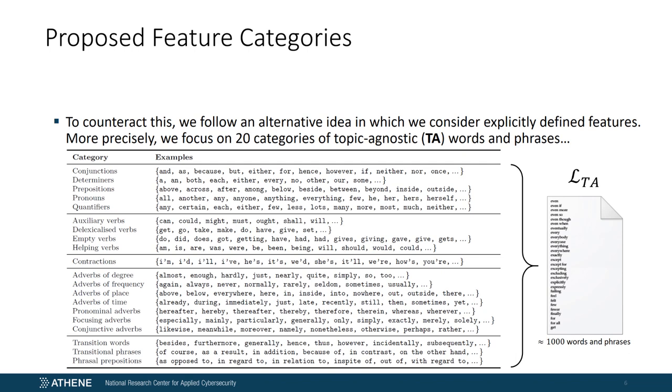To counteract this, we have decided, with regard to our AV approach, to consider only explicitly defined features. More precisely, we focus on 20 categories of topic-agnostic words and phrases, including function words, contractions, several subclasses of verbs and adverbs, and transitional phrases. Noted for convenience, I'll use the abbreviation TA for topic-agnostic. All words and phrases contained in these categories are merged into a single list denoted by LTA, which comprises a total of about 1000 words and phrases.